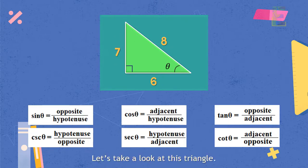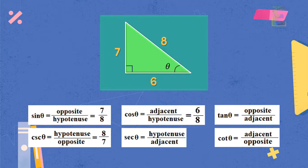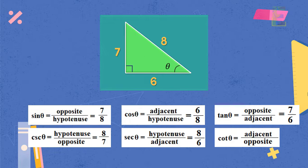Let's take a look at this triangle. Since sine theta is equal to opposite over hypotenuse, the equation will become sine theta equals 7 over 8. And for the cosecant, since it is just the reciprocal of sine, the equation will become cosecant theta equals 8 over 7. For cosine, since cosine is adjacent over hypotenuse, the equation will become cosine theta equals 6 over 8. And for the secant, since it is just the reciprocal of cosine, the equation will become secant theta equals 8 over 6. And for the tangent, the equation will become tangent theta equals 7 over 6. And since cotangent is just the reciprocal of tangent, therefore cotangent is equal to 6 over 7.